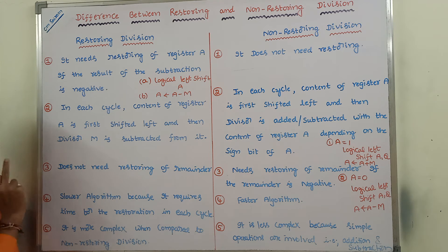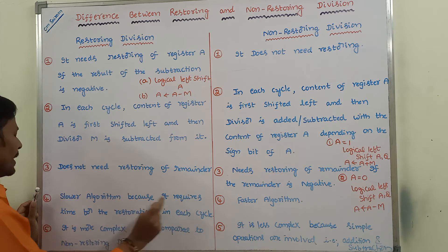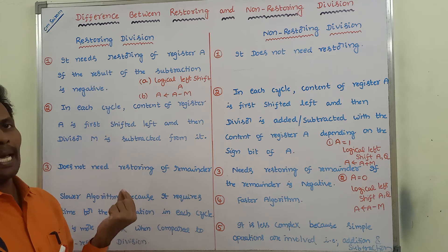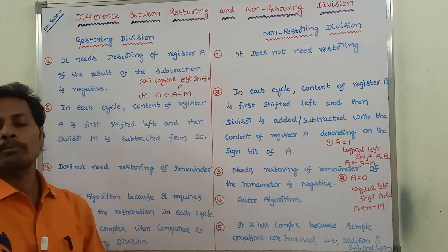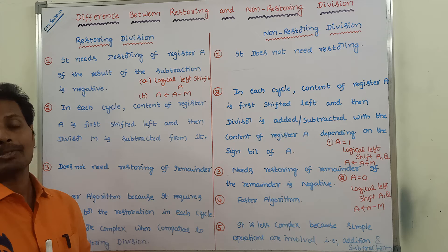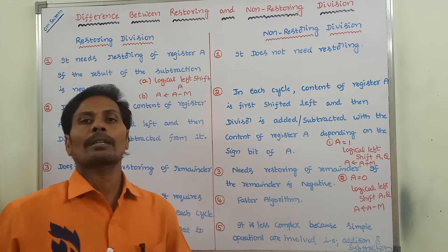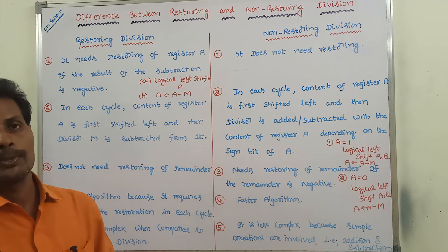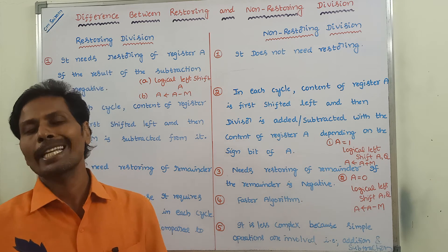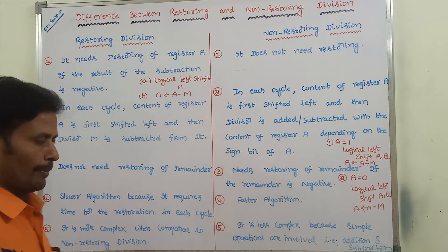Fourth point: restoring division algorithm is a slower algorithm because it requires time for the restoration in each cycle. Whereas in the case of non-restoring division algorithm, it is a faster algorithm because in each cycle there is no restoring performed.